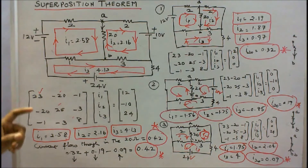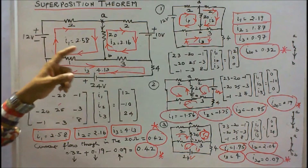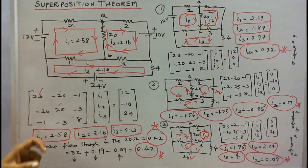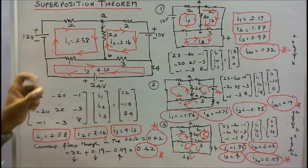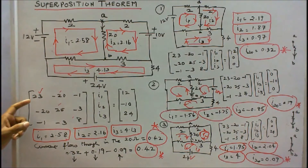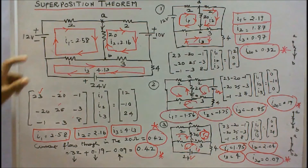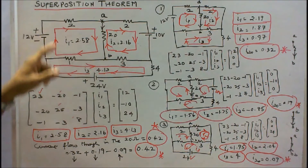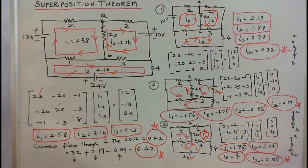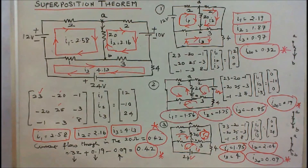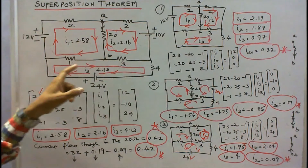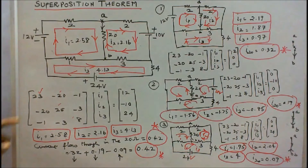By using the loop method, I have to write the matrix. There are three loops: loop 1, loop 2, and loop 3, with current direction clockwise. I find the diagonal elements of the matrix. The first loop resistance is 20+2+1 = 23. The second loop resistance is 20+2+3 = 25. The third loop resistance is 3+4+1 = 8. All diagonal elements are found.